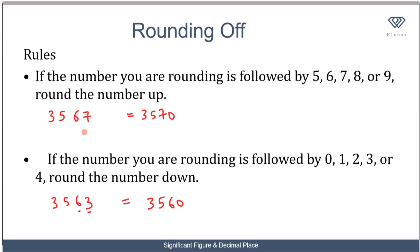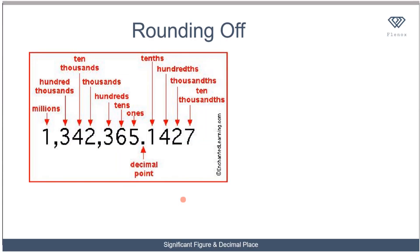If you look at the first example, 3570 is greater than 3567, which is why it is referred to as rounding up. In the second case, 3560 is lower than 3563, so that is rounding down.